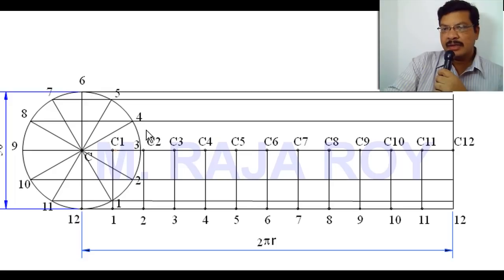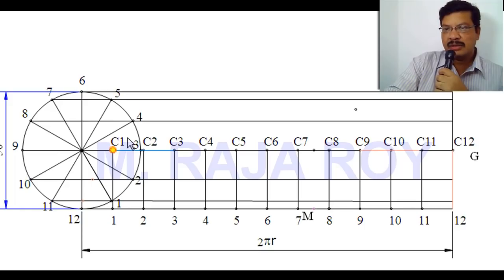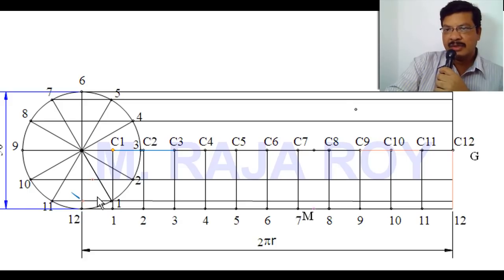After getting the locus of centers, the next step is to trace the points on the cycloid. Take C1 as center with R radius — that means the radius of the rolling circle. Here, the radius of the rolling circle is 25, since the diameter is 50. Draw an arc onto the locus of 1. That arc gives us point P1. To get P2, take C2 as center with the same 25 radius. Draw an arc onto the locus of 2. This point is P2.